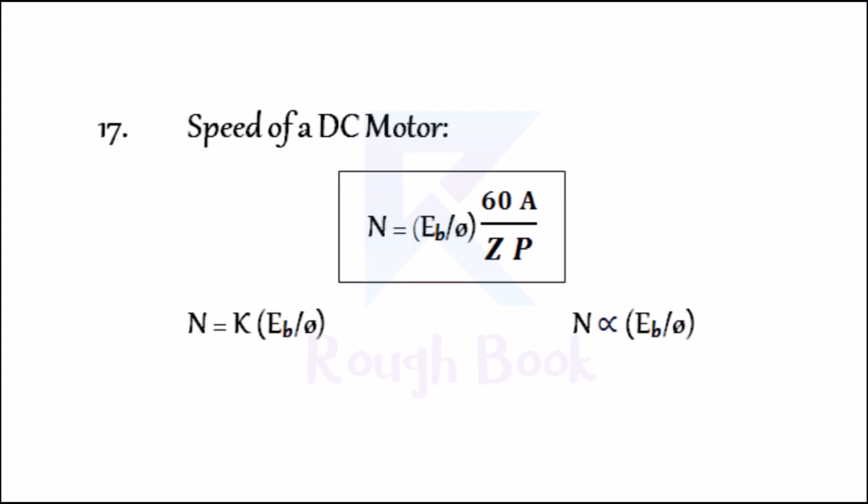Speed of a DC motor: The equation is given by N = (EB / φ) × (60A / ZP). Here Z, A, and P are constants for a particular machine, and therefore these quantities are considered as constant k. Therefore, N = k × (EB / φ), or N is directly proportional to EB / φ. Thus, speed is directly proportional to the back EMF EB and inversely proportional to the flux φ.